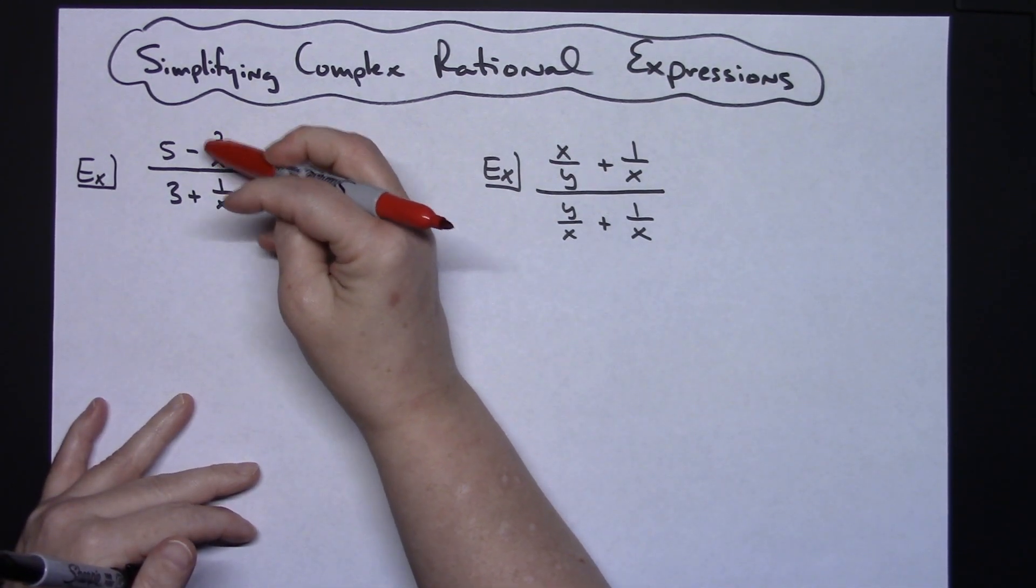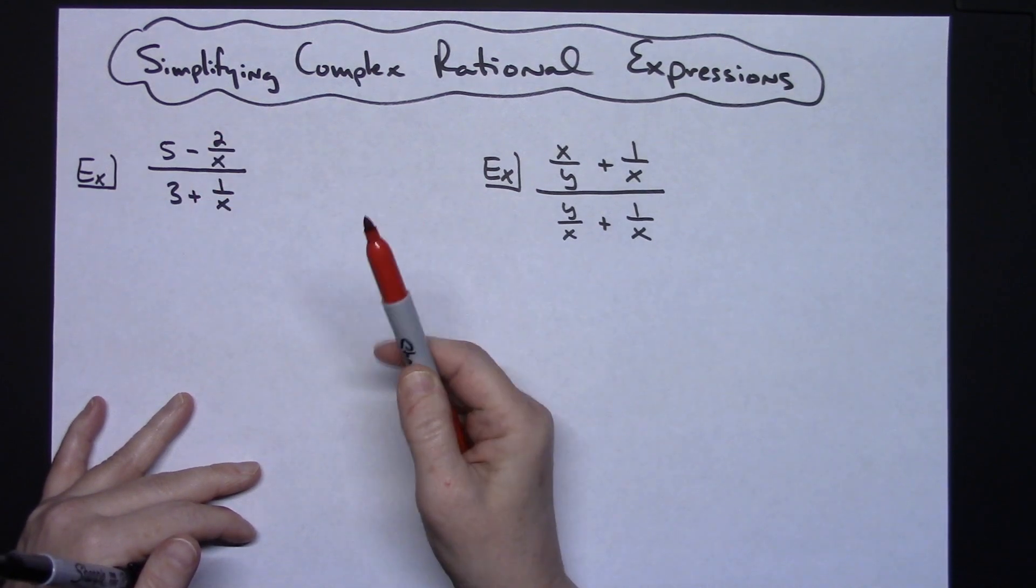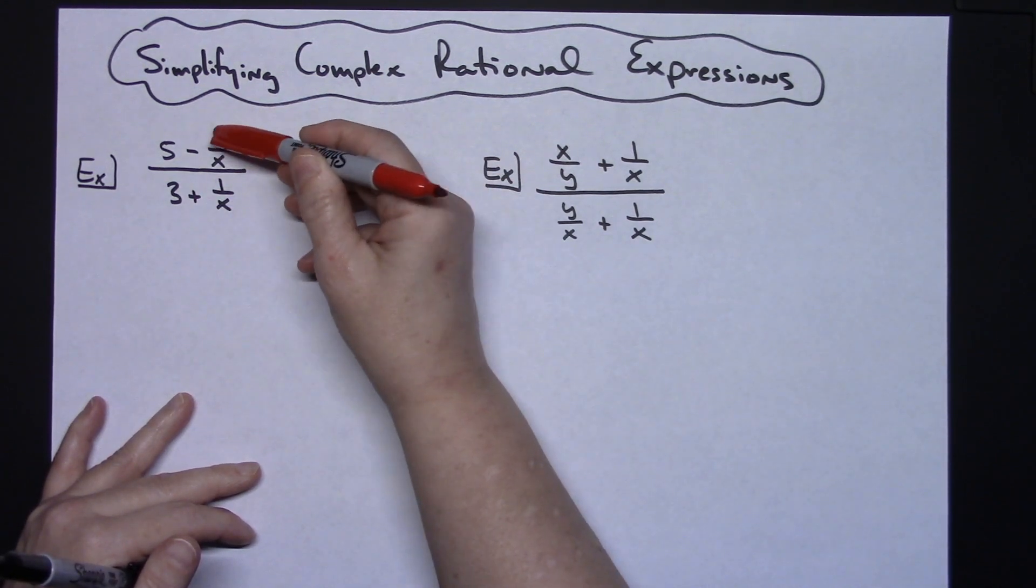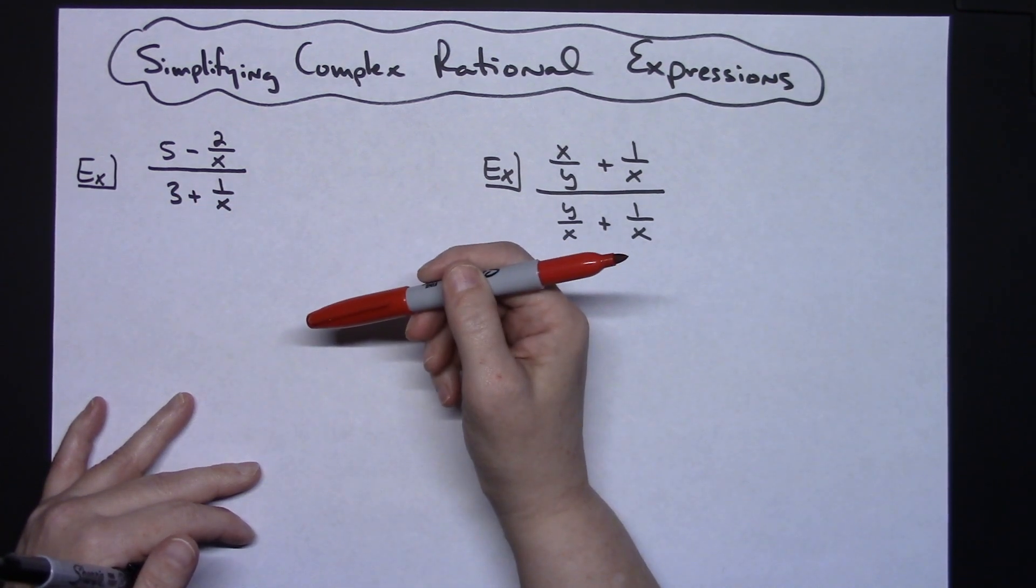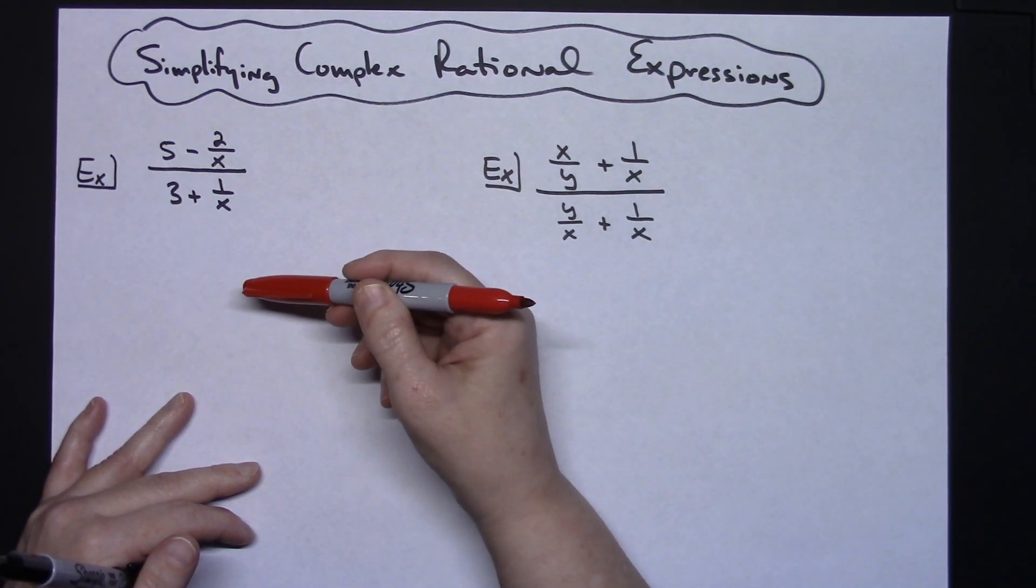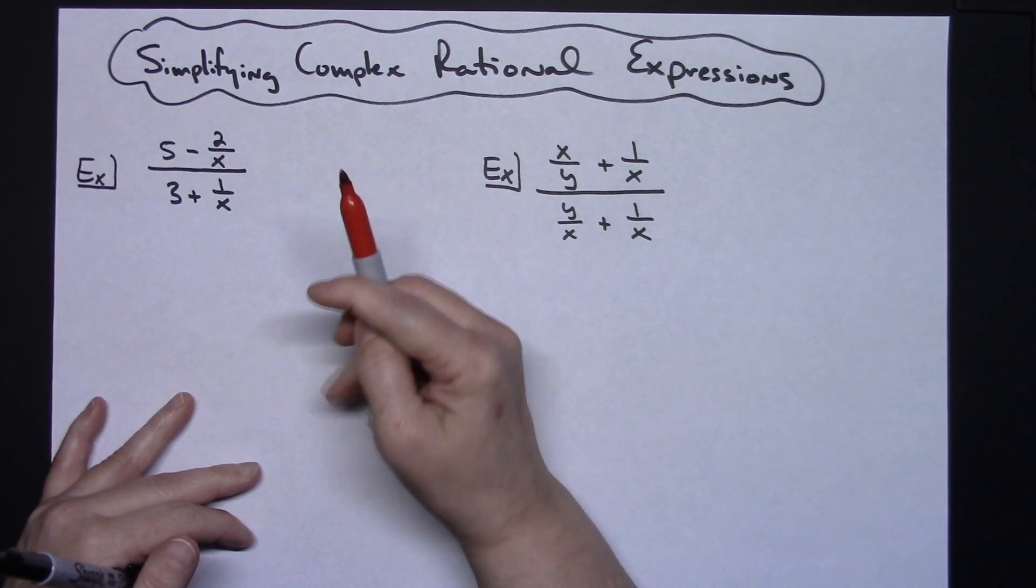If you have a complex fraction or a complex rational expression, a fraction in the numerator and a fraction in the denominator, the easiest way to simplify this type of expression is to multiply through by that least common denominator.